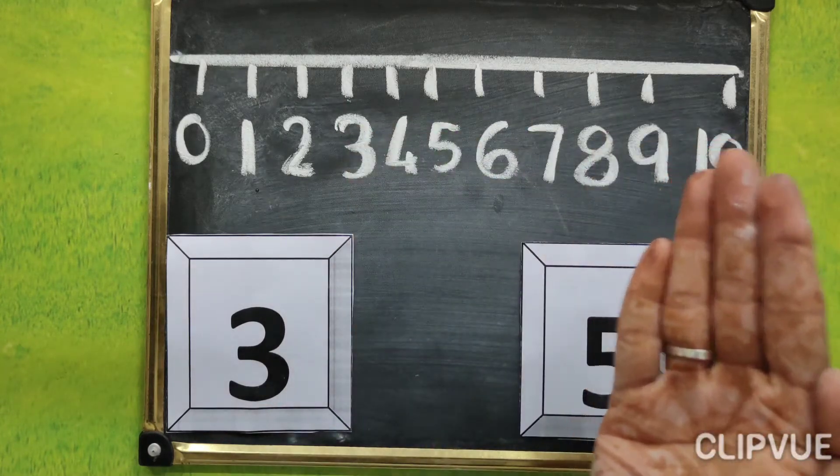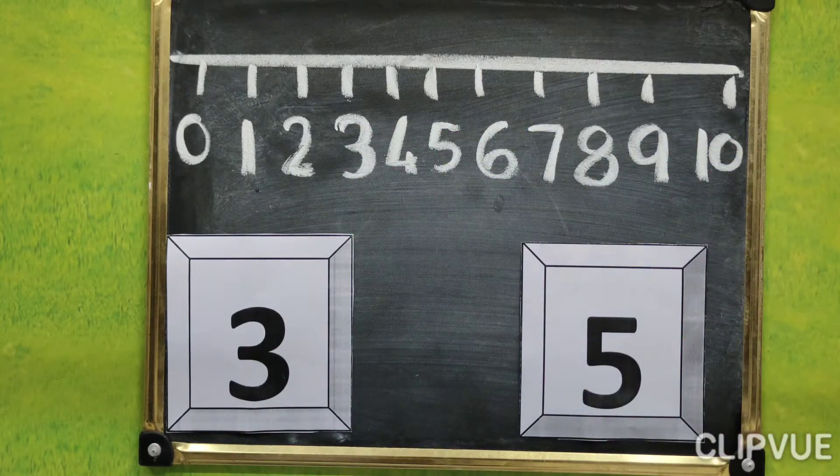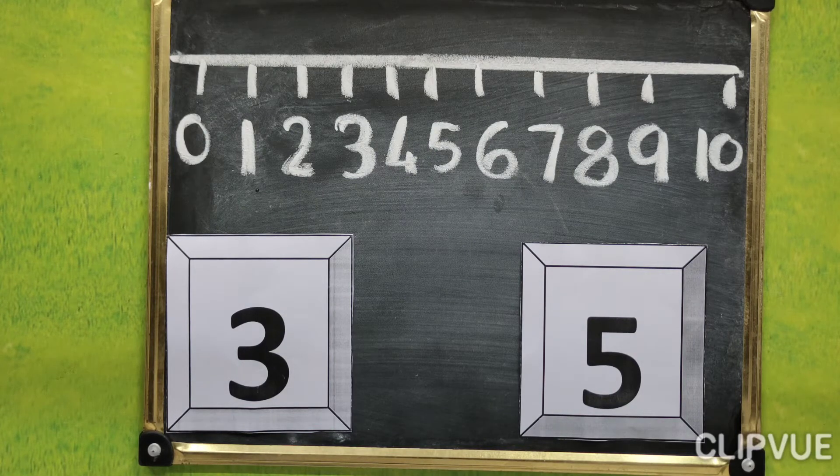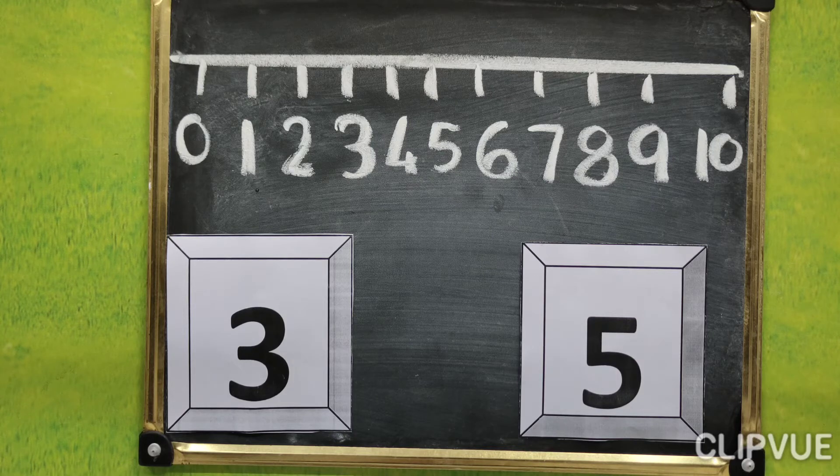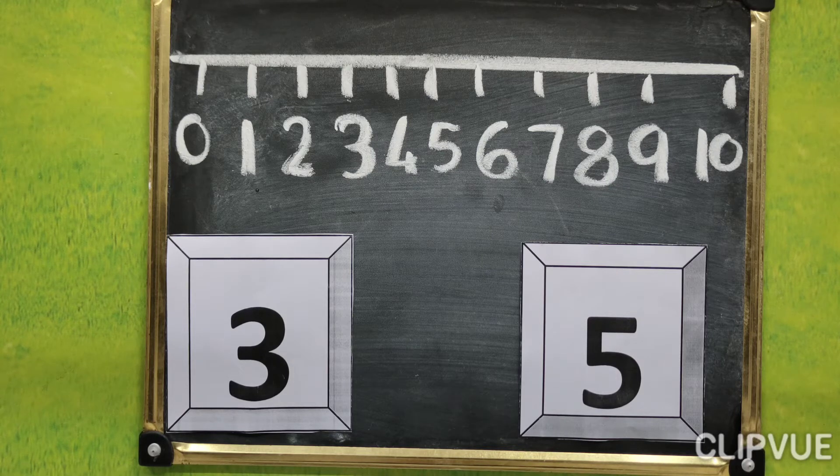Or you can say the number which comes below is called big number.